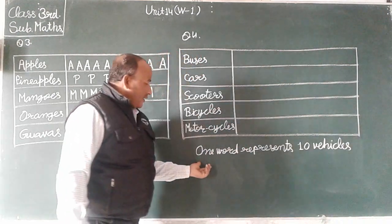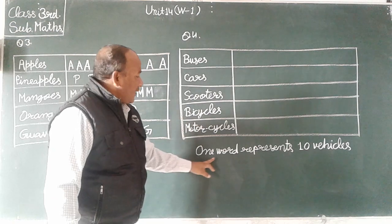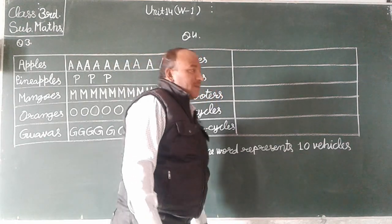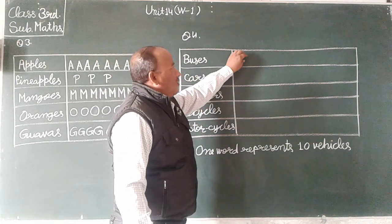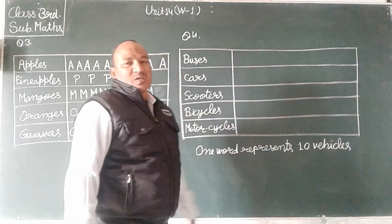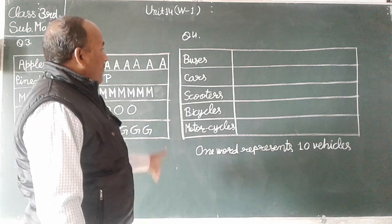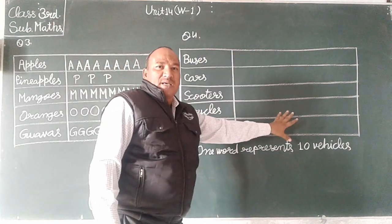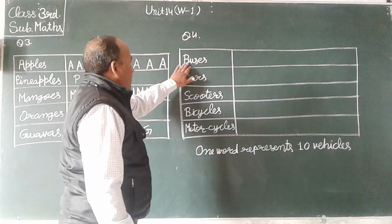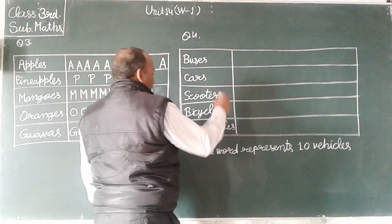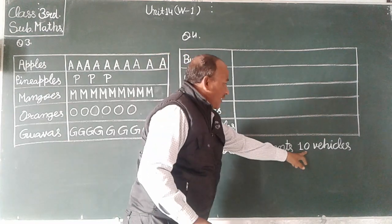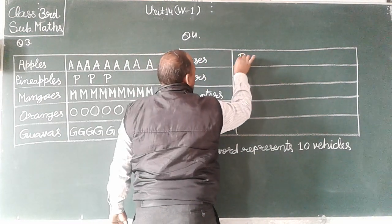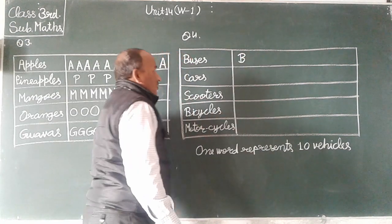One word represents 10 wicker. This means that we have one word which means 10 wicker, which means 10. Then we have 10 wicker, 10 wicker.